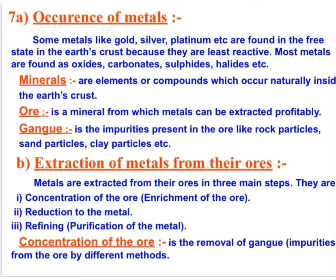Metals are obtained in three states from the earth's crust: first, as minerals — compounds occurring naturally in the earth's crust; second, as ore — a mineral from which metal can be extracted profitably, meaning it contains the maximum proportion of metal; and third, gangue — the impurity present in the ore such as rock particles and sand particles. For extraction of metal from ore, three methods are used: concentration of ore, reduction of metal, and refining of metal.